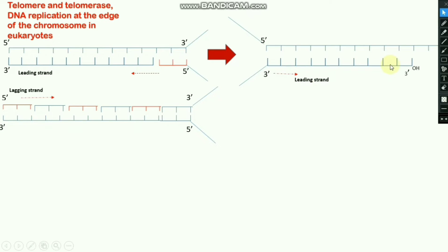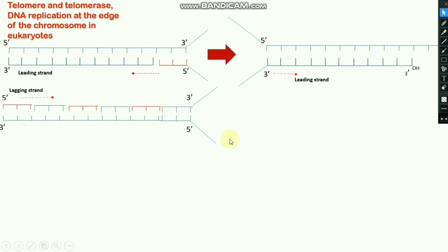As you see in this diagram, in the leading strand, after removal of the primer, there is still a 3' end, meaning there is an OH group. As you know, DNA polymerase can add nucleotides in the 3' to 5' direction, so this gap is fulfilled by the DNA polymerase. For the leading strand there is no issue.